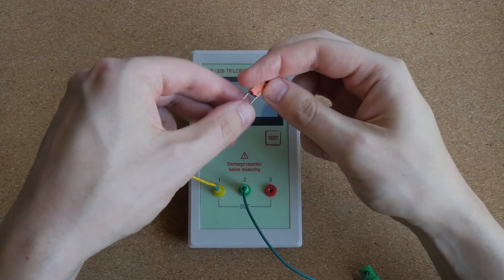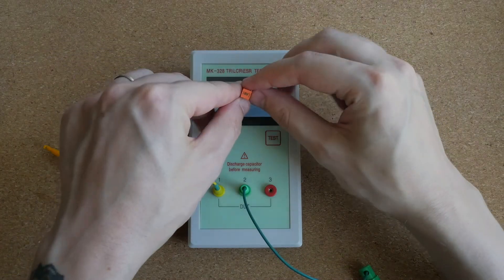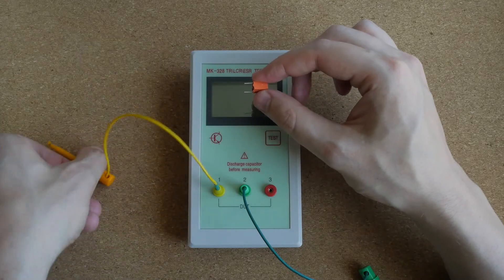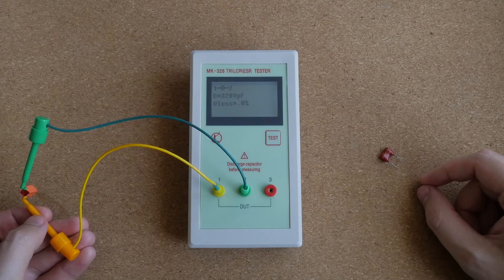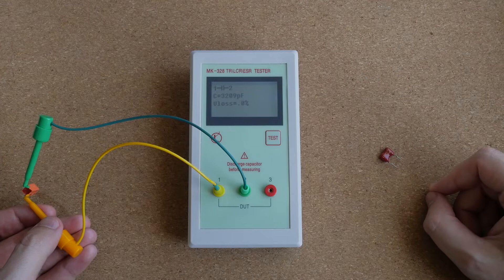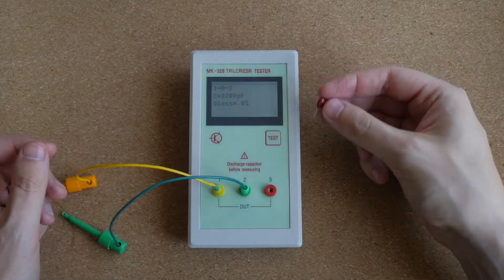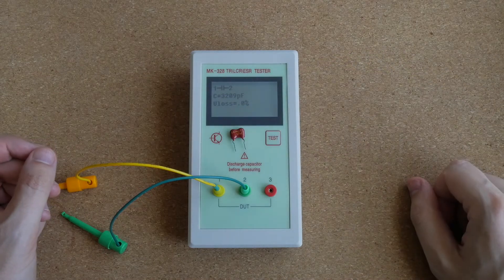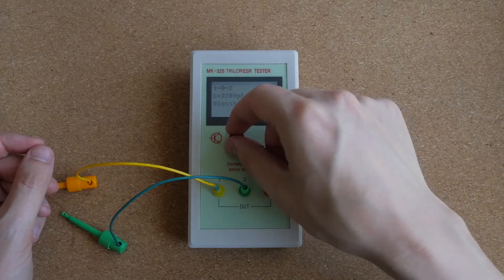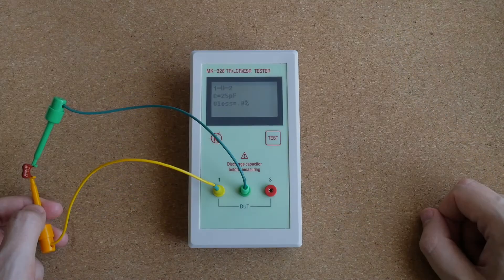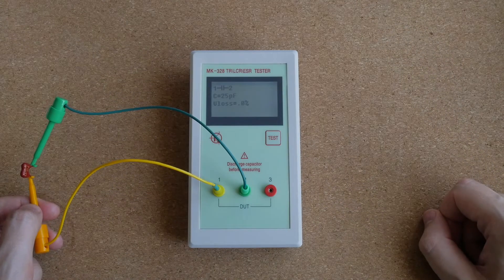The next capacitor is 3300 picofarad or 3.3 nanofarad. We get 3209 picofarad. The final capacitor is just 27 picofarad. This is a silver mica capacitor. We get 25 picofarad. Quite believable.